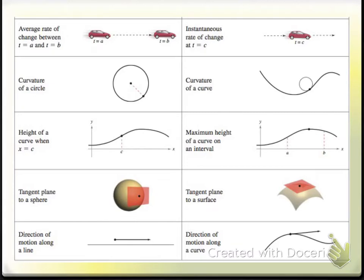With pre-calculus, you can find the average rate of change. For example, it takes you this long to get there and it's this many miles — you can find how fast you went on average. With calculus, you can find the instantaneous rate of change — how fast you're going in an instant.